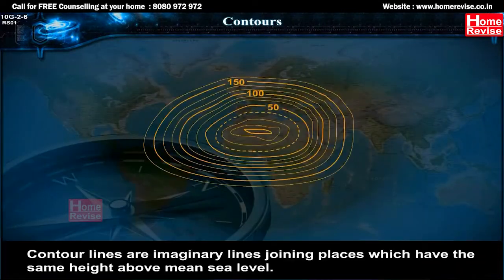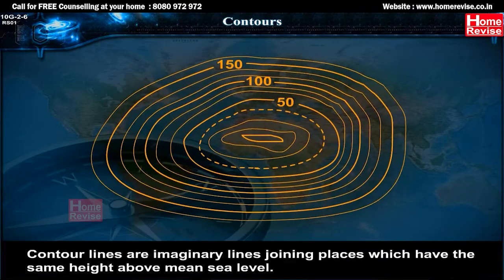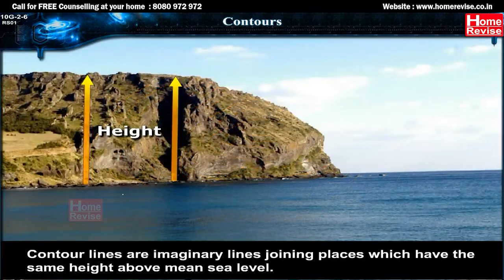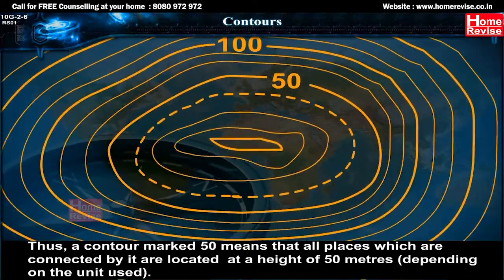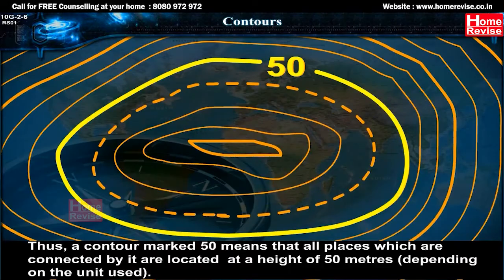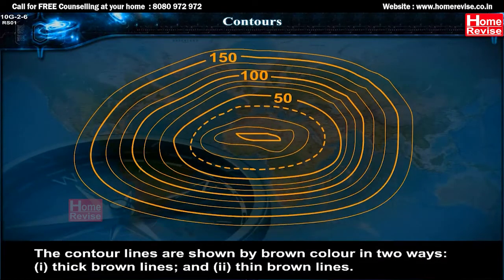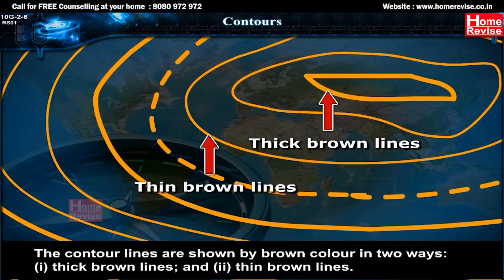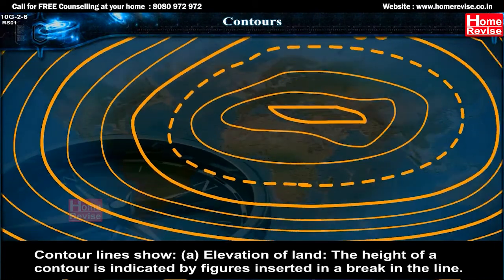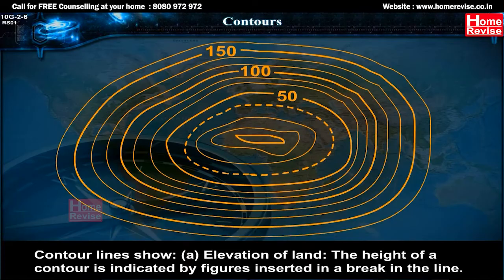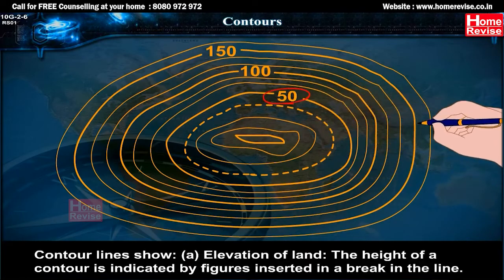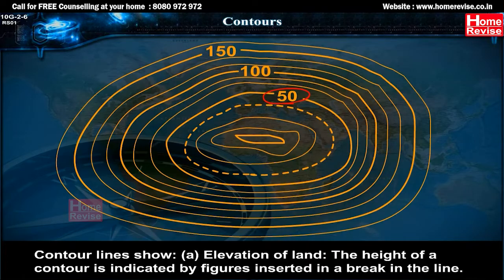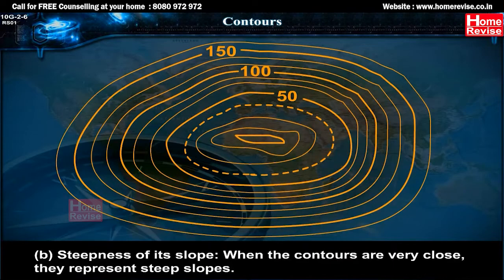Contour lines are imaginary lines joining places which have the same height above mean sea level. Thus, a contour marked 50 means all places connected by it are located at a height of 50 meters. Contour lines are shown by brown color in two ways: thick brown lines and thin brown lines. The height of a contour is indicated by figures inserted in a break in the line, and the steepness of its slope is also conveyed.